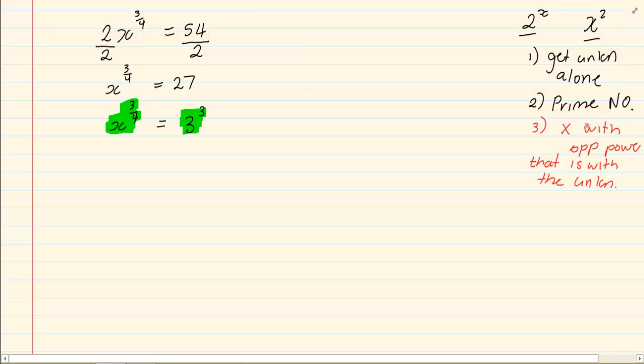So we are going to multiply with the opposite power. But we are specifically looking at the unknown, not the 3 in this case. In this case, we are going to look at the x. Now, what is the opposite power? We have got 3 over 4. The opposite would be 4 over 3, the inverted multiplication.